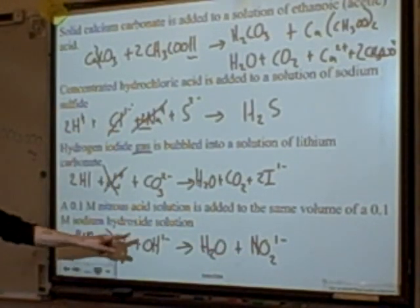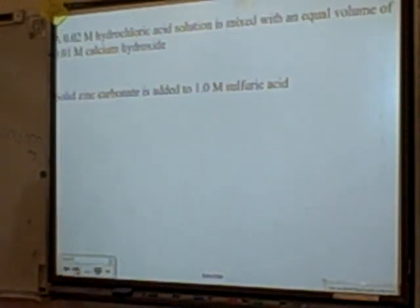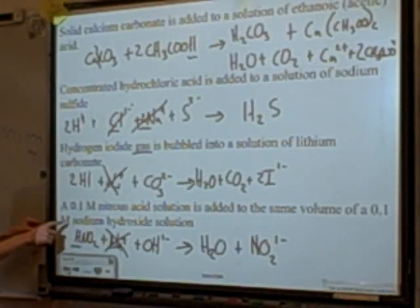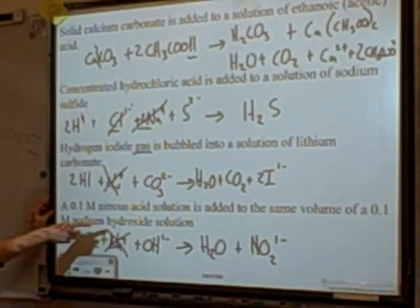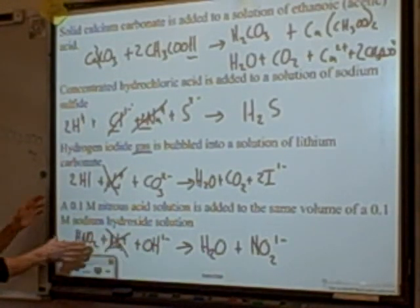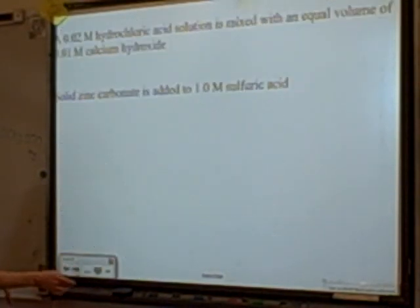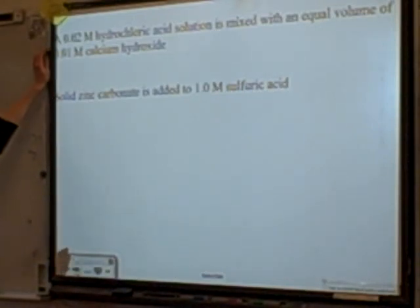Net ionic: HNO2 + OH- → H2O + NO2-. It's balanced — two H's, one O, and two O's. The equal volume and equal molarity means equal moles, matching the 1:1 stoichiometry. That stoichiometry matters with diprotic acids when deciding whether one or both H's are removed.